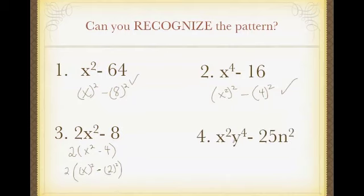This is a more challenging one. There's not a common factor. So I need to see, can I write this thing as the difference of squares? x squared can be written as this squared. And then y to the fourth could be written as y squared squared. 25n squared can be written as 5n squared. So all of these are examples of the difference of squares.